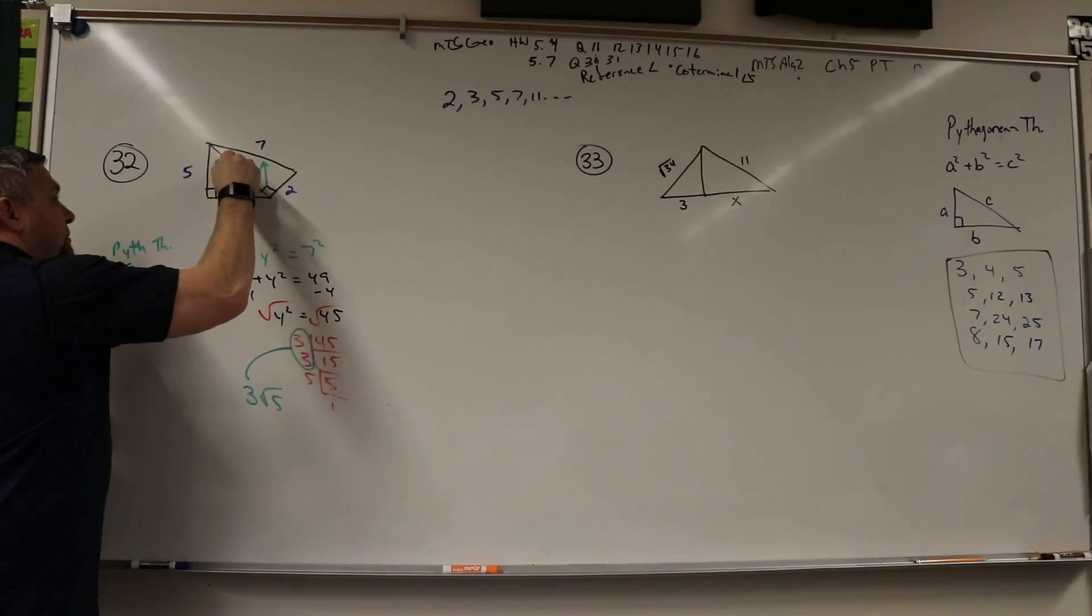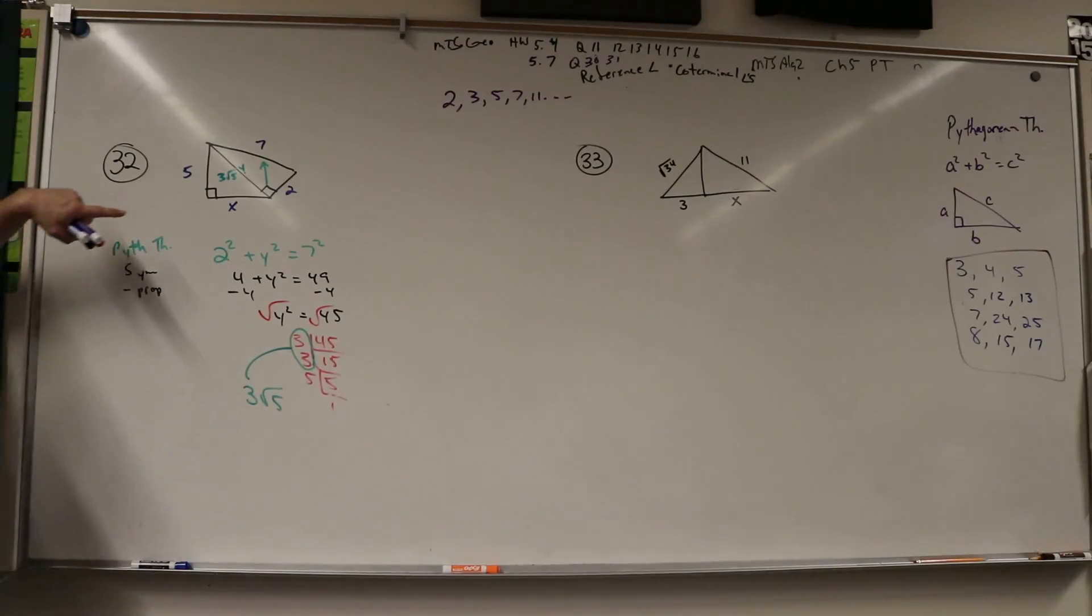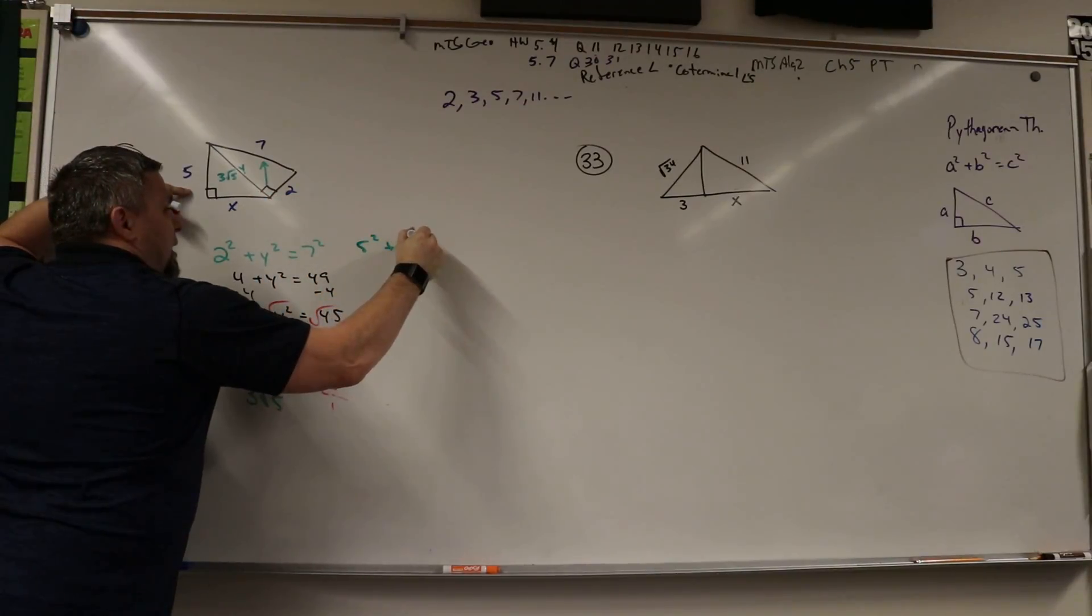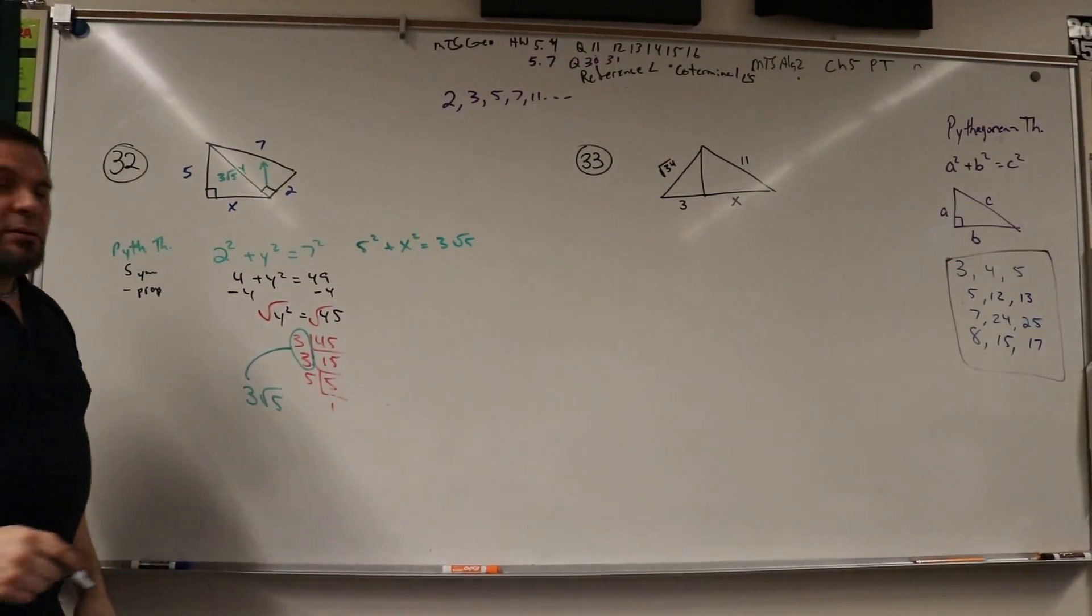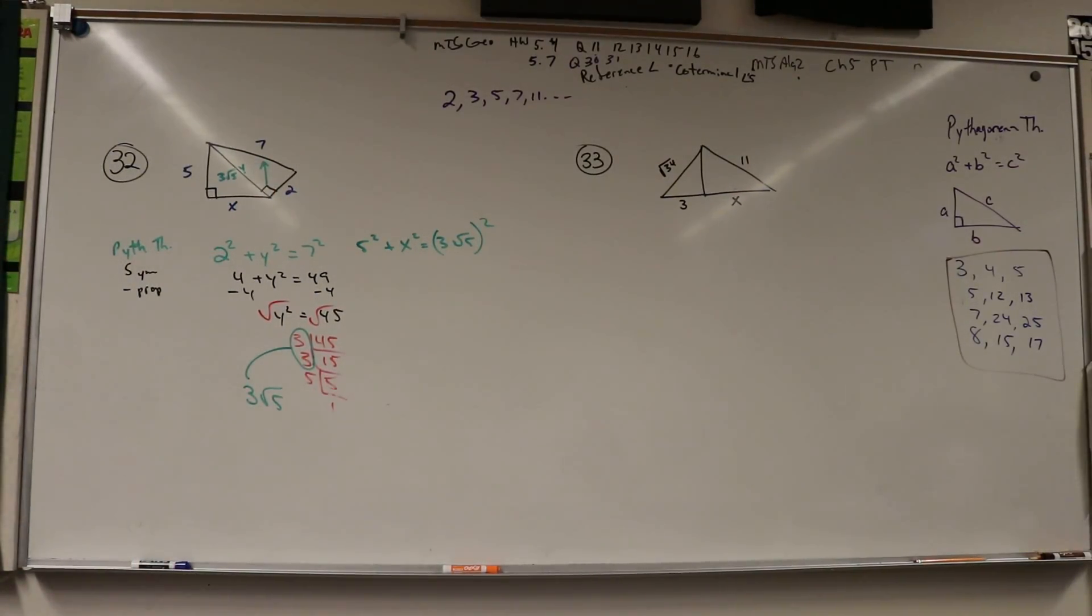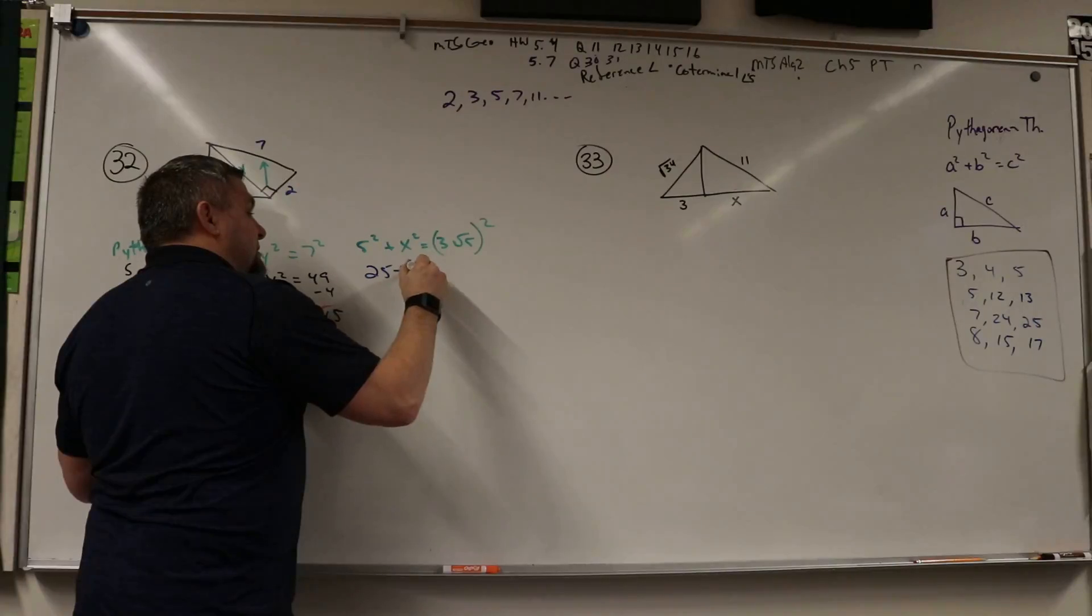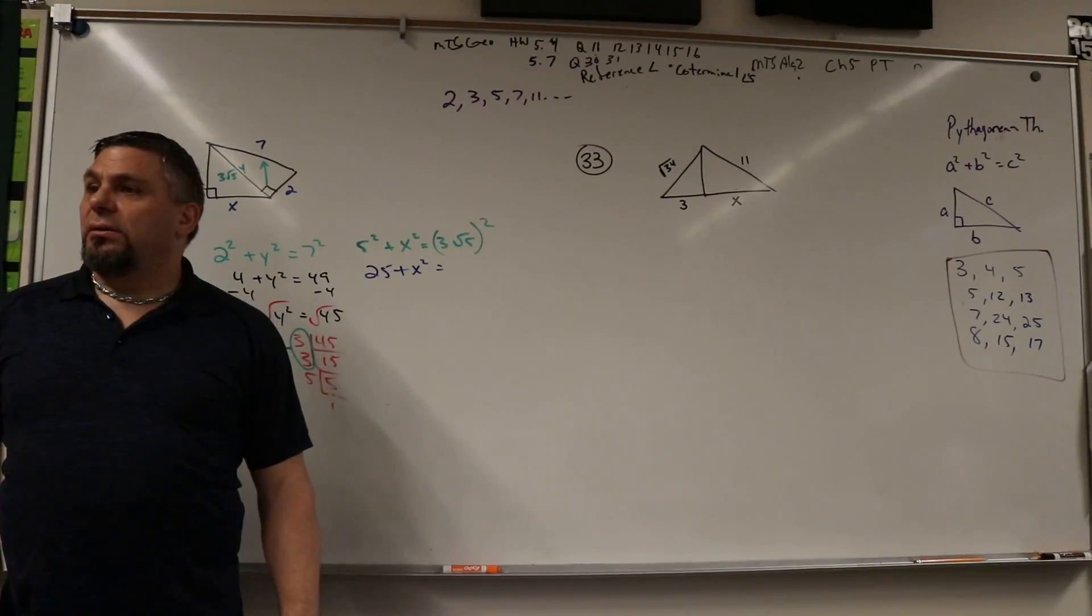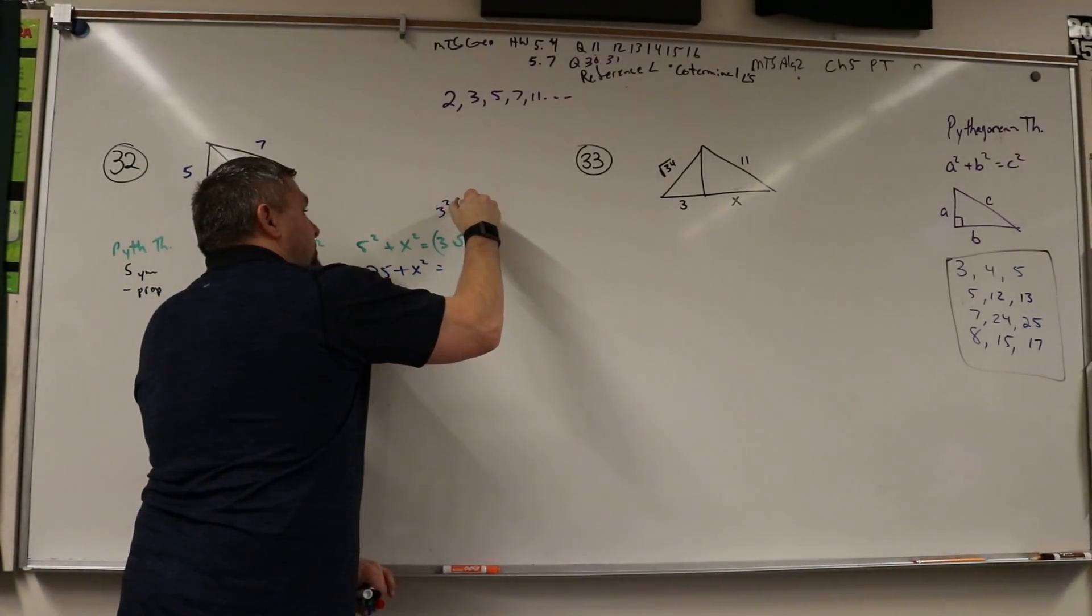That means this piece is 3√5. Now this is the Pythagorean theorem: 5² + x² = (3√5)². This is where students have a hard time because they're like, well, 5² is easy, that's 25. x² I don't know, but what is 3²? 3² = 9.